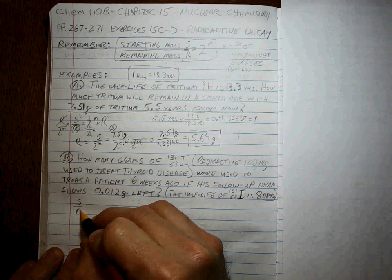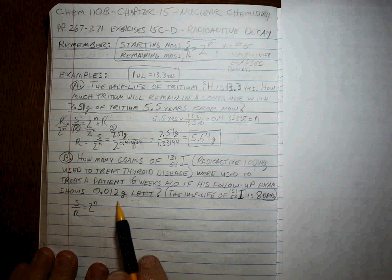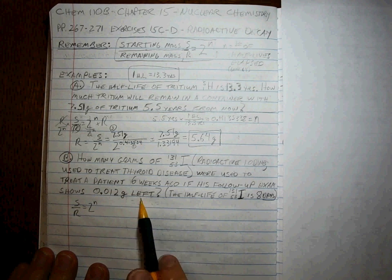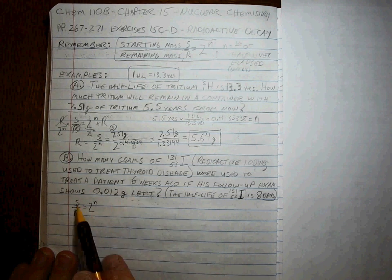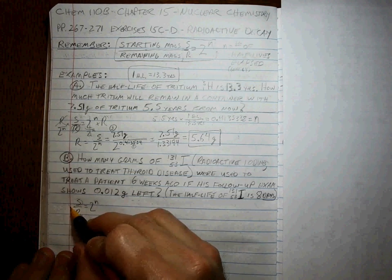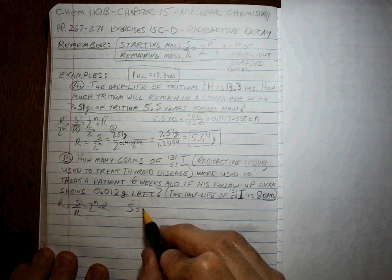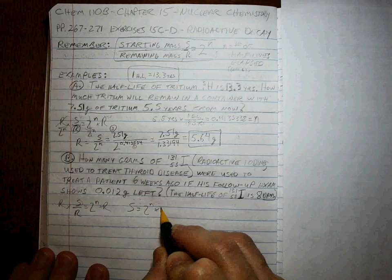Start over remaining is equal to 2 to the N. What are we solving for here? This is how much is left, this is the remaining, right? So we need to solve for S, which is easy enough. We'll multiply both sides by R. So S is equal to 2 to the N times R.